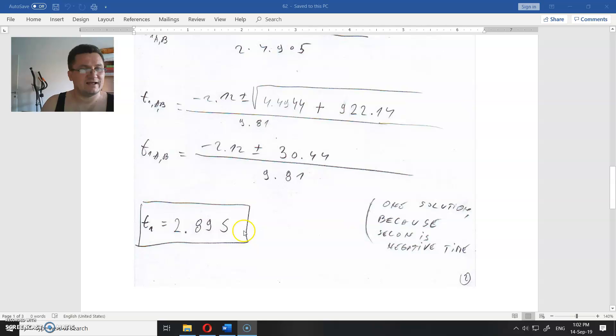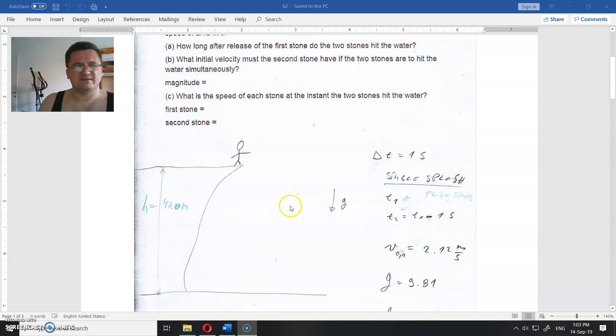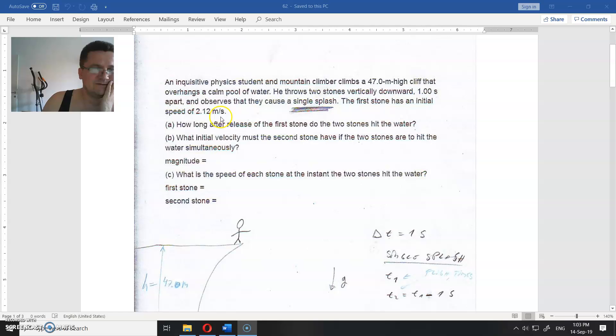So this is the time that the pebble will fall from 47 meters above if it is thrown with 2.12 meters per second.